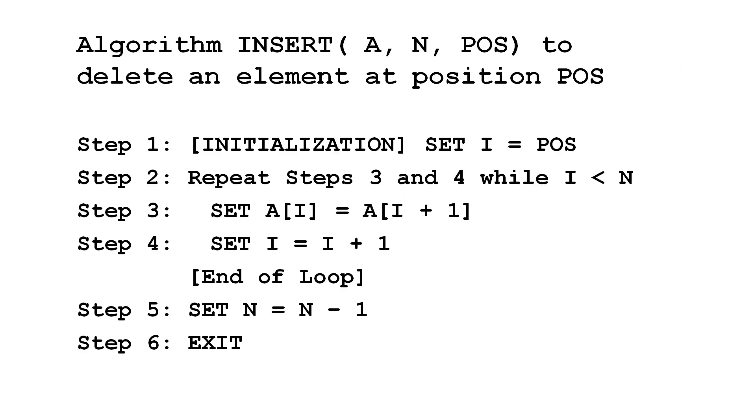Now let's take a look at the algorithm. We have an array A with size n and we have to delete an element at position pos. In step 1, we initialize a counter i equal to pos because we have to shift elements starting from pos. We repeat steps 3 and 4, checking the value of i each time. When i reaches n, we will terminate the loop.